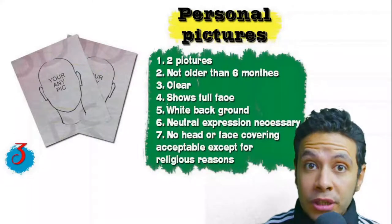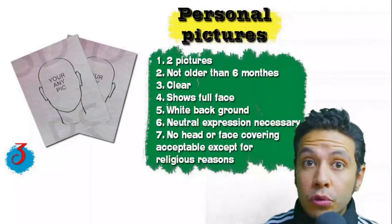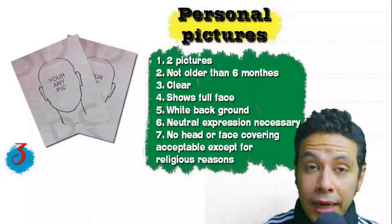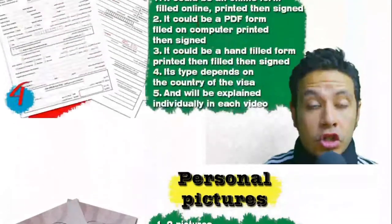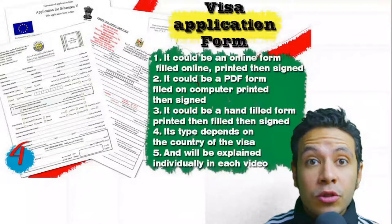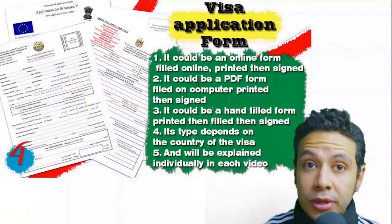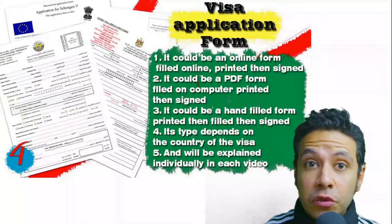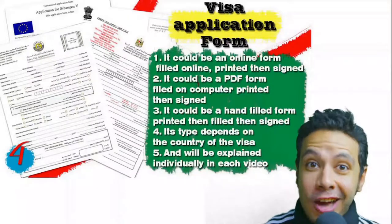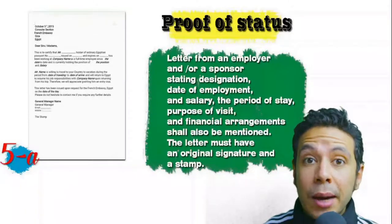For personal pictures, you need at least two — sometimes one or three are required. They must not be older than six months, must clearly show your full face, preferably with a white background, with a normal and neutral expression. No head or face covering is acceptable except for religious reasons. For the visa application form, generally one copy is needed, though sometimes two or three are required. You can fill it online and then print and sign it.